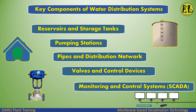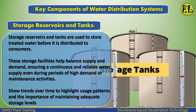Key components of water distribution systems include: reservoirs and storage tanks, pumping stations, pipes and distribution network, valves and control devices, monitoring and control systems including SCADA, and storage reservoirs and tanks.